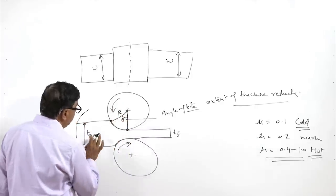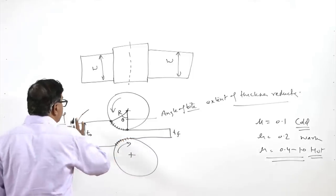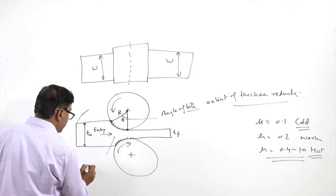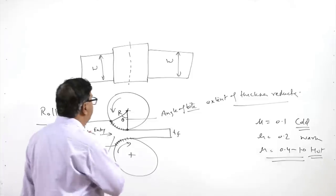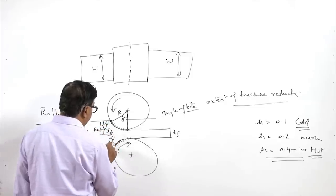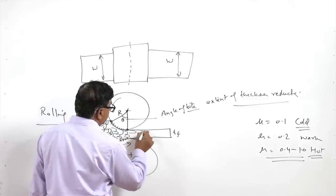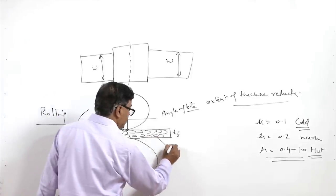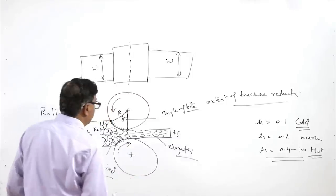During rolling, friction between the roller and plate surface pulls the plate in between the rollers. When the metal enters the rollers it is compressed, and compression leads to plastic deformation — reducing the thickness of the metal. The metal may have equiaxed grains before deformation, but after passing through the rollers it elongates gradually, showing significant elongation after deformation.